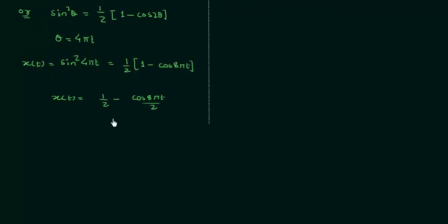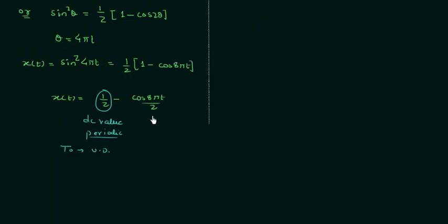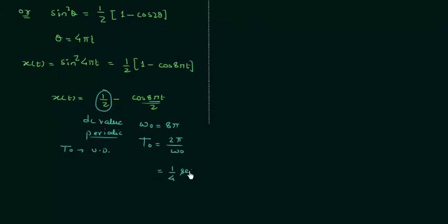We have already discussed the periodicity of DC values. The value 1/2 is a DC value, which is periodic in nature, but its fundamental period T₀ is undefined. The term cos(8πt)/2 is definitely periodic, with fundamental angular frequency ω₀ = 8π. From this we calculate T₀ = 2π/ω₀ = 2π/8π = 1/4 seconds, or 0.25 seconds.